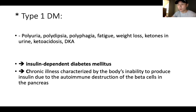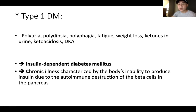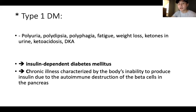Type 1 diabetes usually develops over a long period and is typically diagnosed in children and teenagers. The signs and symptoms are polyuria, polydipsia, polyphagia, fatigue, weight loss, ketones in the urine, and diabetic ketoacidosis (DKA). Polyuria means excessive urination. Polydipsia is excessive thirst — when they pee a lot, they lose fluid, so obviously they get thirsty. Polyphagia means increased appetite.